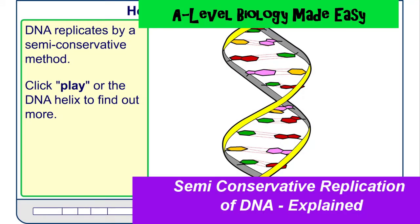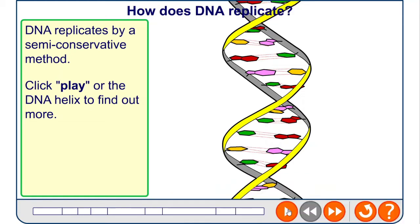DNA replicates by a semi-conservative method, which means you end up with two DNA molecules that are identical to the original molecule and each contains one strand from the original parent molecule.